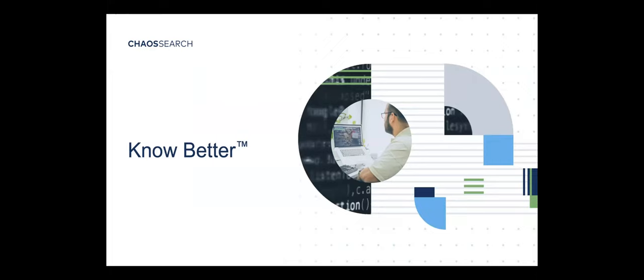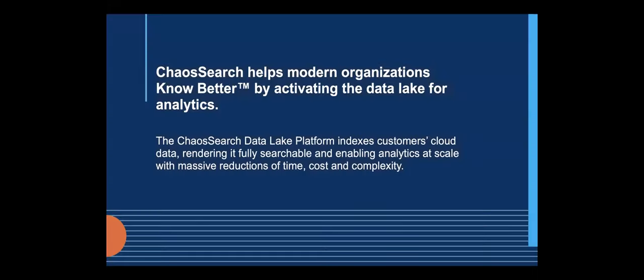We were here back in January for an awesome session, so thank you for having the ChaosSearch team back today. ChaosSearch — what do we do? We help modern organizations know better and we are in the data lake space. We help our customers activate the data lake for purposes of analytics of all kinds. We deliver a platform that indexes all cloud data and makes it fully searchable, enabling analytics at scale with massive reductions in time, cost, and complexity.